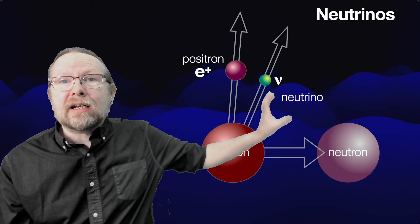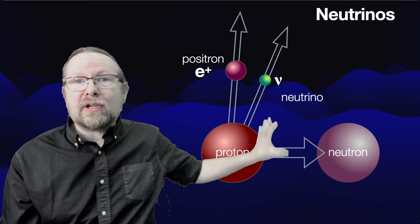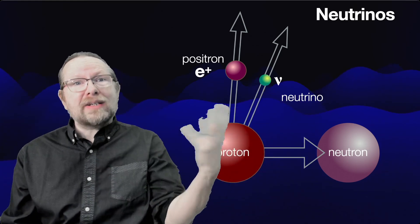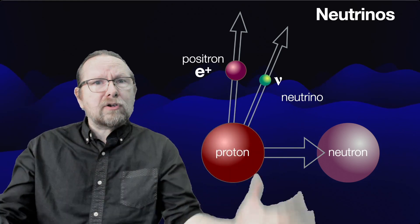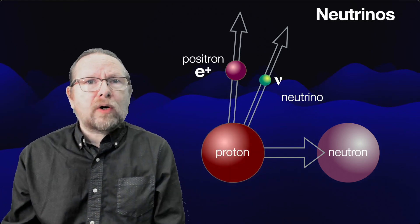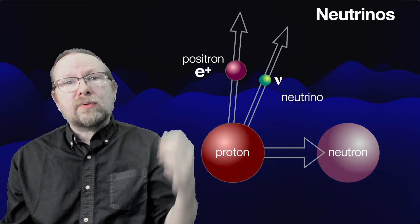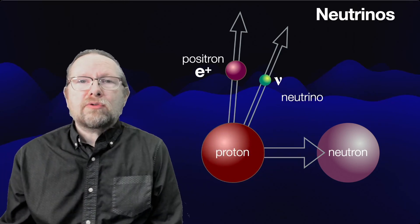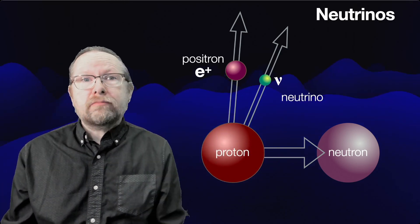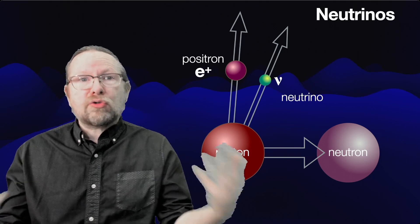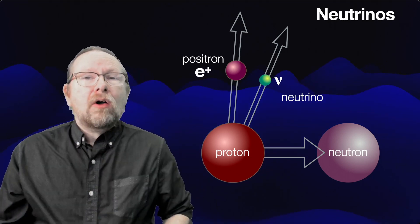We know that this process creates neutrinos because we detect them with neutrino detectors — these big underground tanks of water. We detect neutrinos coming from the sun. We know that the sun is producing these neutrinos, but most of them go right through the earth and come out the other side. There are trillions of neutrinos passing through your body right now.